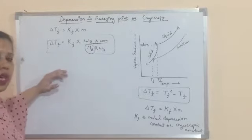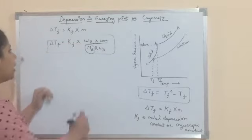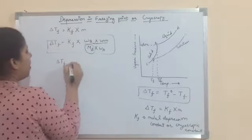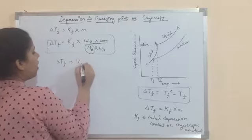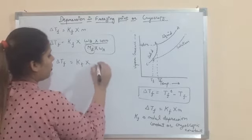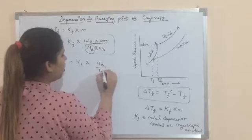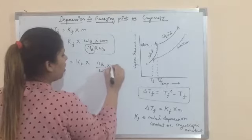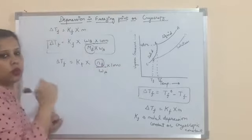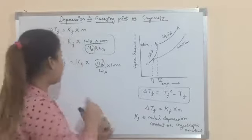How can we say that depression in freezing point is a colligative property? We can see from the formula that ΔTf is proportional to the number of moles of solute. Hence it is a colligative property.